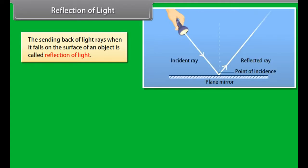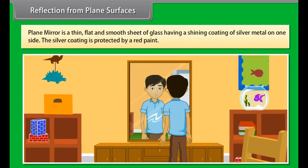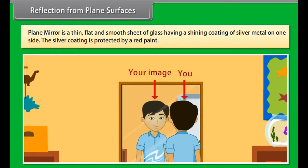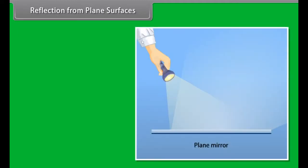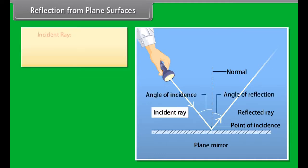Reflection of light: The sending back of light rays when it falls on the surface of an object is called reflection of light. Objects having polished surface reflect more light than objects having unpolished dull surfaces. Silver is the best reflector of light. Reflection from plain surfaces: Plain mirror is a thin, flat, and smooth sheet of glass having a shining coating of silver metal on one side. The silver coating is protected by red paint.